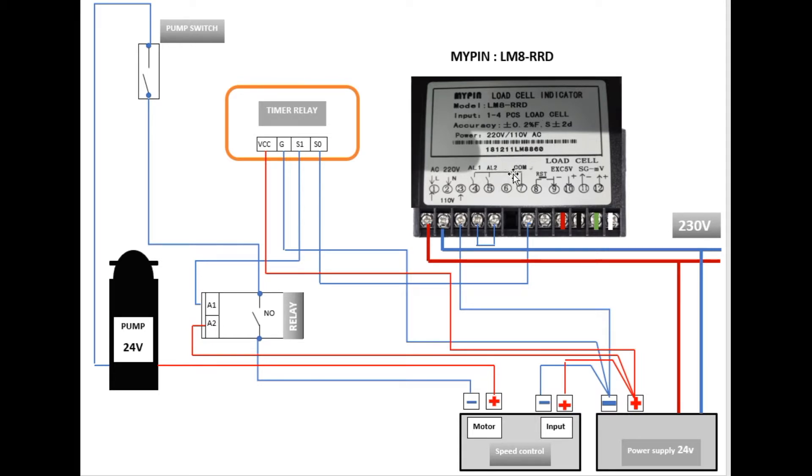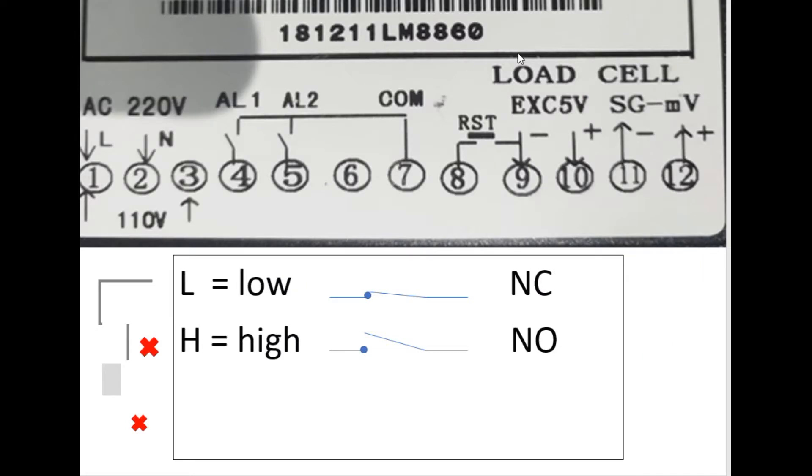And for me to work, I have to have separate common for each relay. So for this reason, let me move to the second. Okay guys, let us talk about the load controller and see all the ports from one marked to twelve. One and two if you have 220 volt AC.